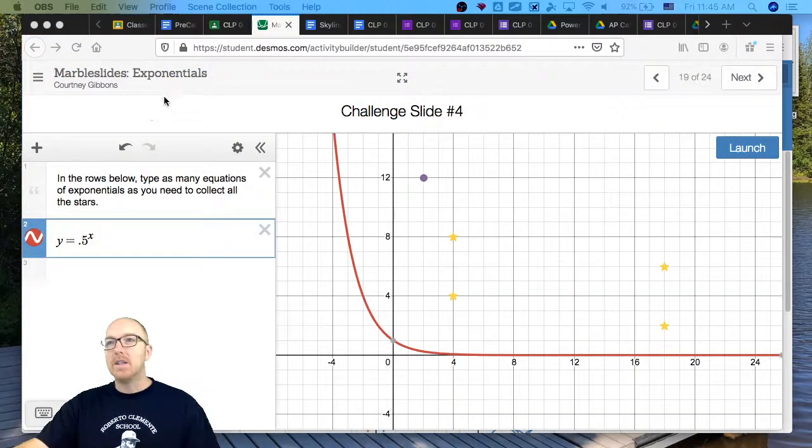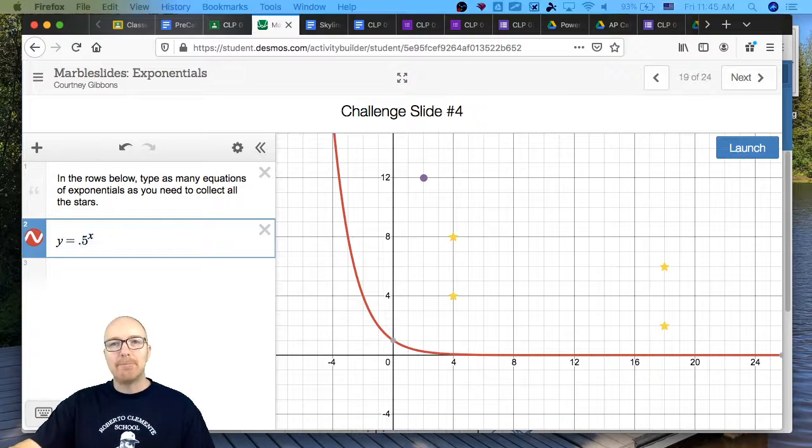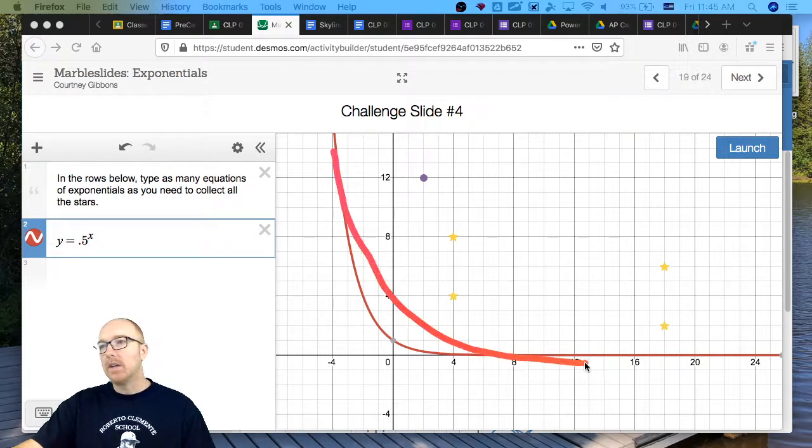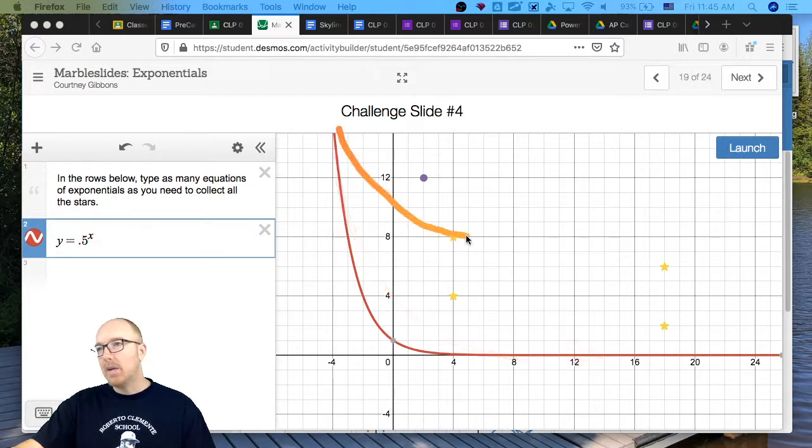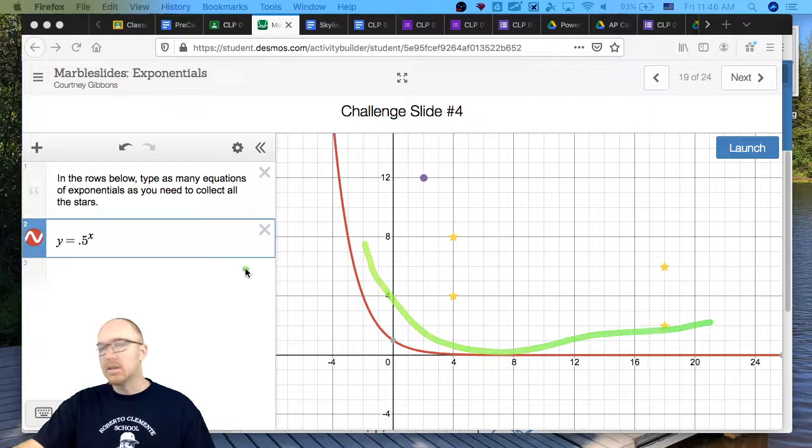Let's begin with challenge slide number four. So this one's a little tricky. We got to hit these stars. Now again, there's more than one way to do this. So if you find a better way than I got, then so be it. I'm starting off with this equation y equals 0.5 to the x because I know if I have a number that's less than one here, then it will decay. It's decreasing. So choosing a number that's less than one here brings the graph down in this direction. I'm going to try to come down like this, maybe send another graph back like this and maybe a third like this.